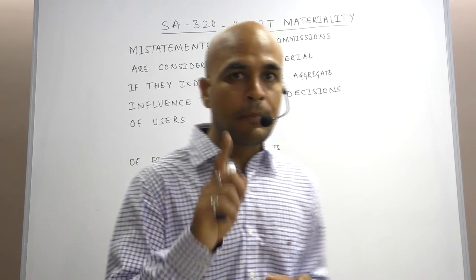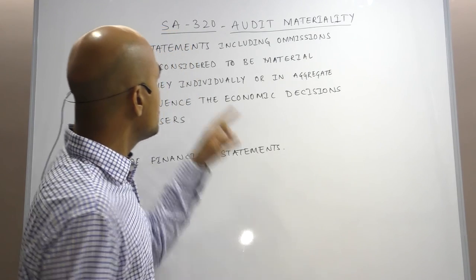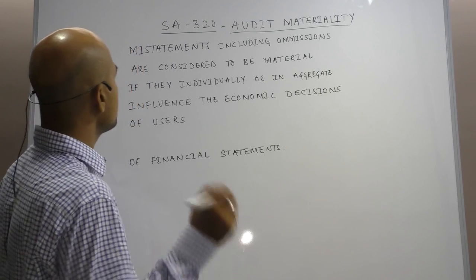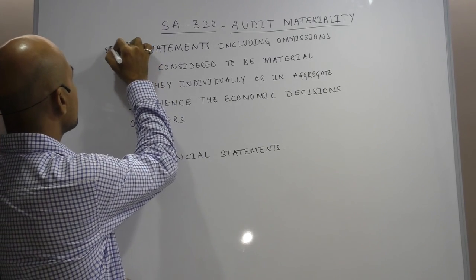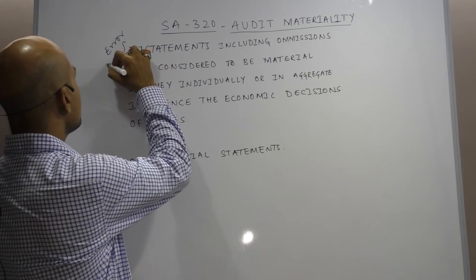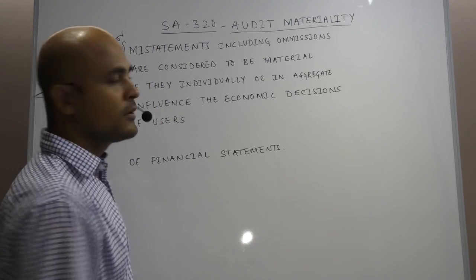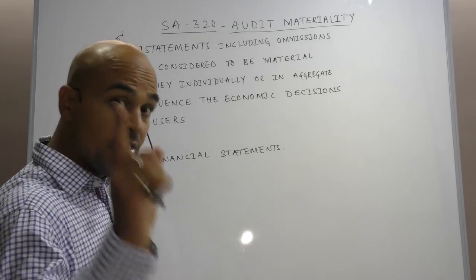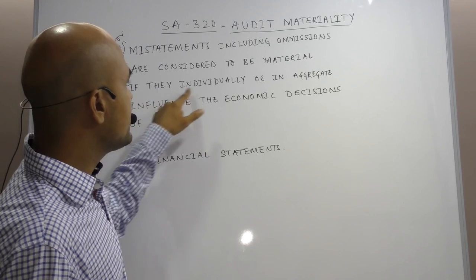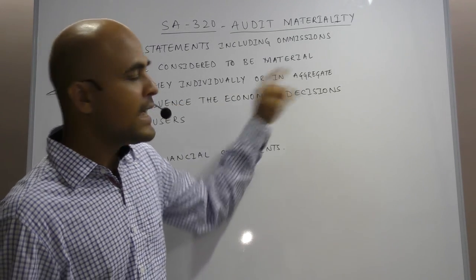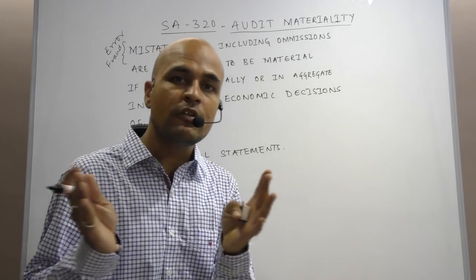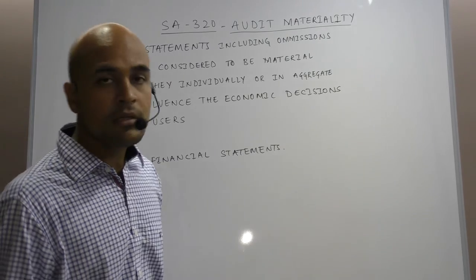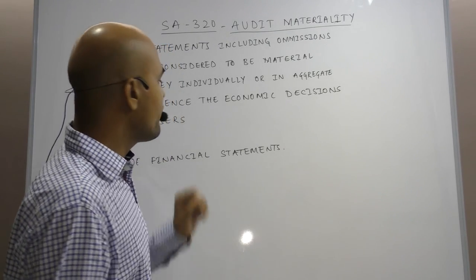As per the standard, materiality means misstatements including omissions. When I say misstatement, it can be an error or it can be a fraud. There has to be an error, fraud, or omission. It will be material if they individually or in aggregate — meaning a collection of misstatements — influence the economic decision of users of financial statements.